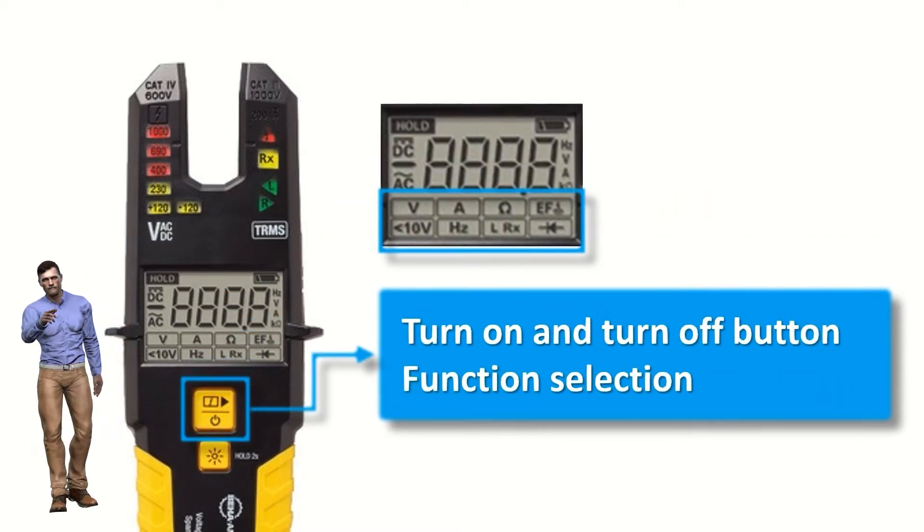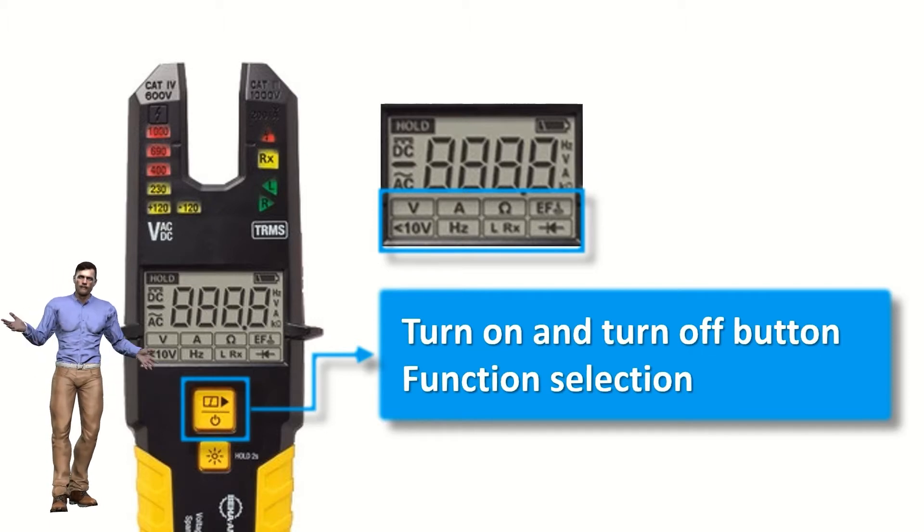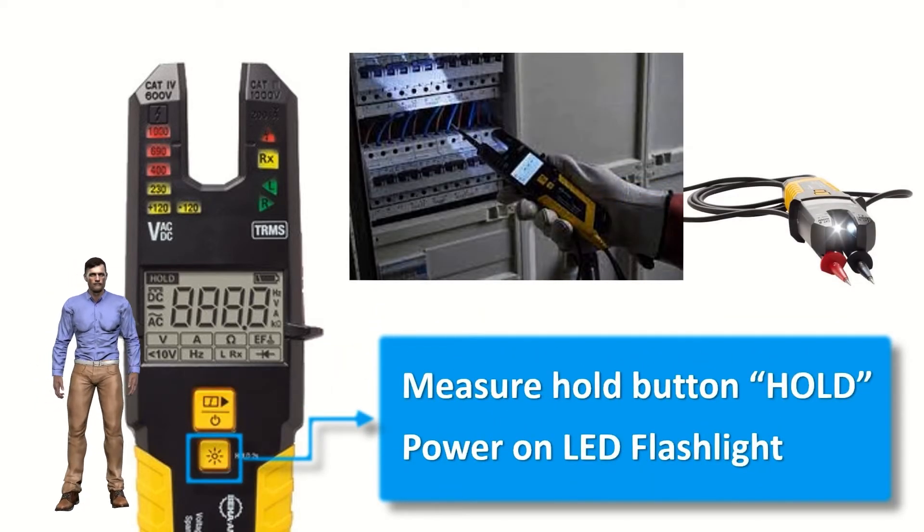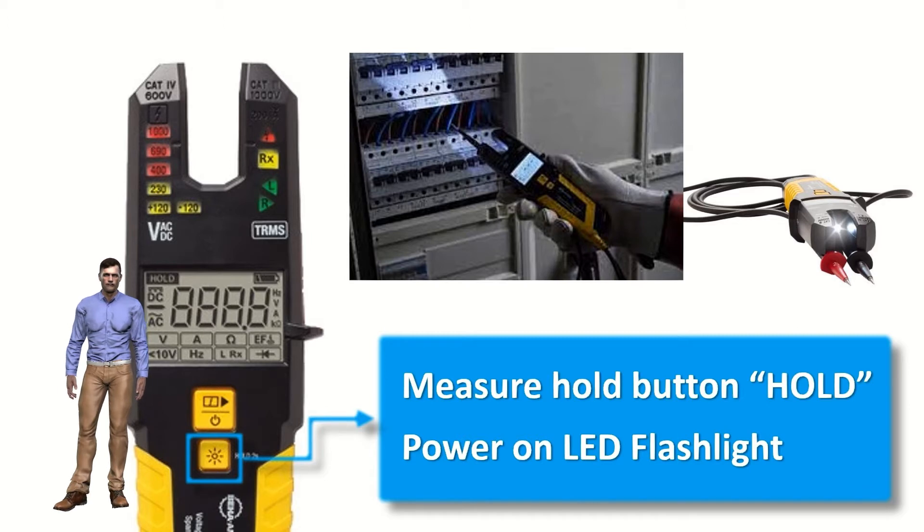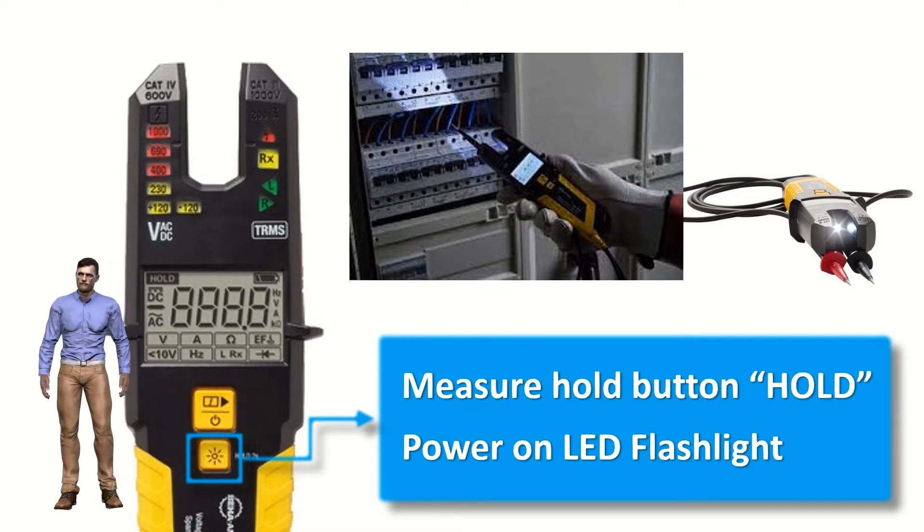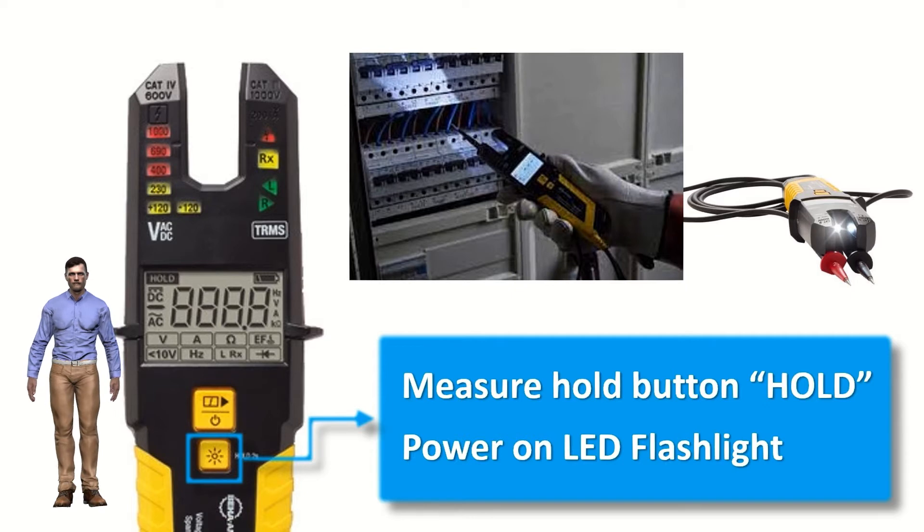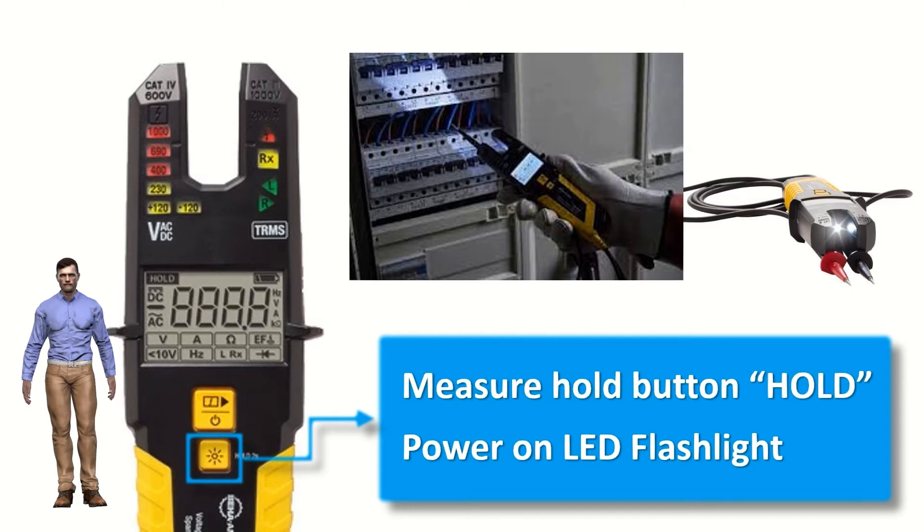To simplify its use, the clamp has only two buttons. The first one allows switching on and off, but it is also used for the sequential selection of the measurement and test functions, so that each time we press it, we can select a different function. The other button also has two functions. If we press it for less than two seconds, we will turn on an LED flashlight that it incorporates in its tip, which is a great help to see in electrical panels with little lighting. If we press it for more than two seconds, then the present measurement of the display will freeze, that is, it will be fixed on the display, even with the test leads removed from the measuring points, which is very useful for example in the case that due to the arrangement of the cables, we cannot see the display directly.